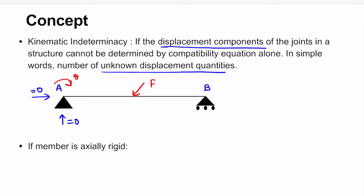At point B, vertical displacement is zero since it cannot move upward. However, it can move horizontally because it is a roller support, so we have an unknown horizontal displacement delta B. Point B can also rotate, giving us an unknown rotation theta B. The total unknown displacements are theta A, theta B, and delta B, so the degree of kinematic indeterminacy for this simply supported beam is three.